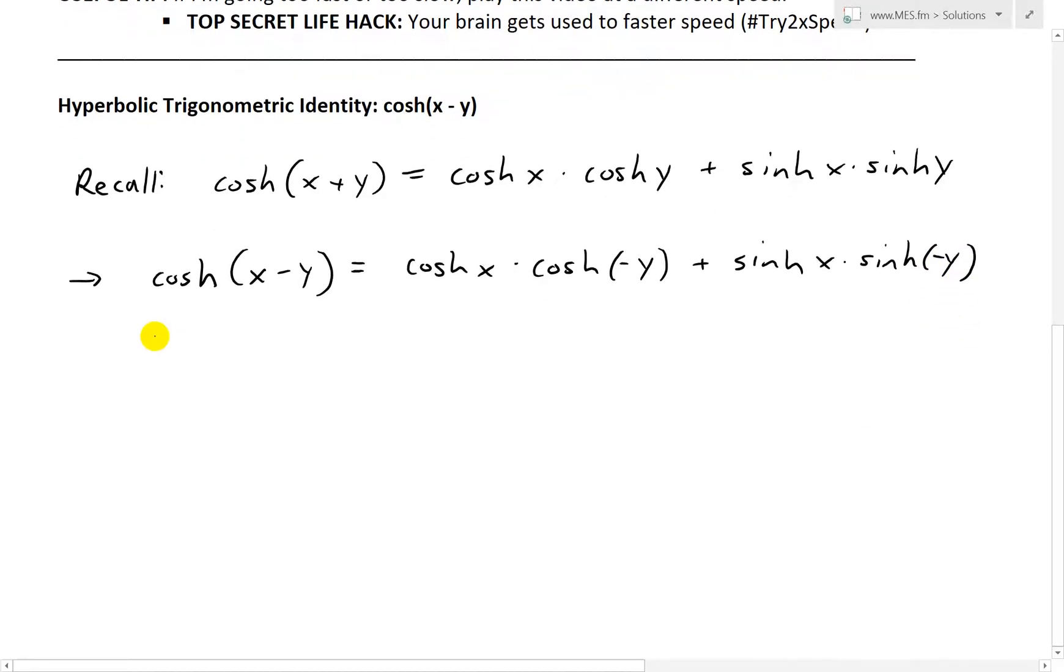And now recall the identity for cosh negative y, or we could just look at the definition. So note that cosh, if we use the definition of negative y, the definition of cosh is equal to e to the power of negative y plus e to the power of negative negative y, just using the definition. And now this equals 2. What we'll have is this becomes positive there. So we'll have e positive y,